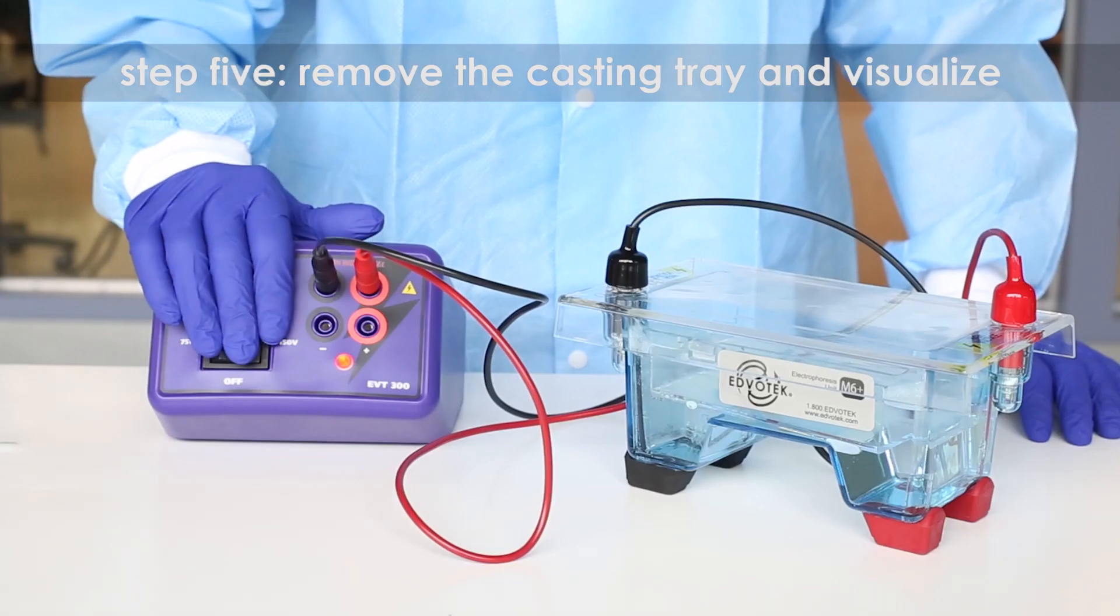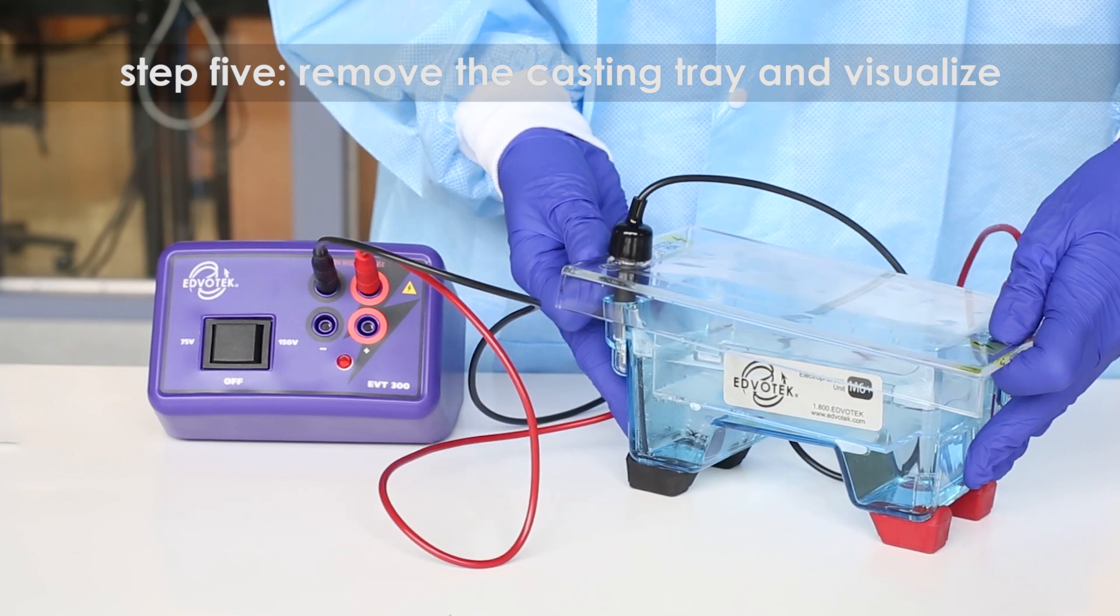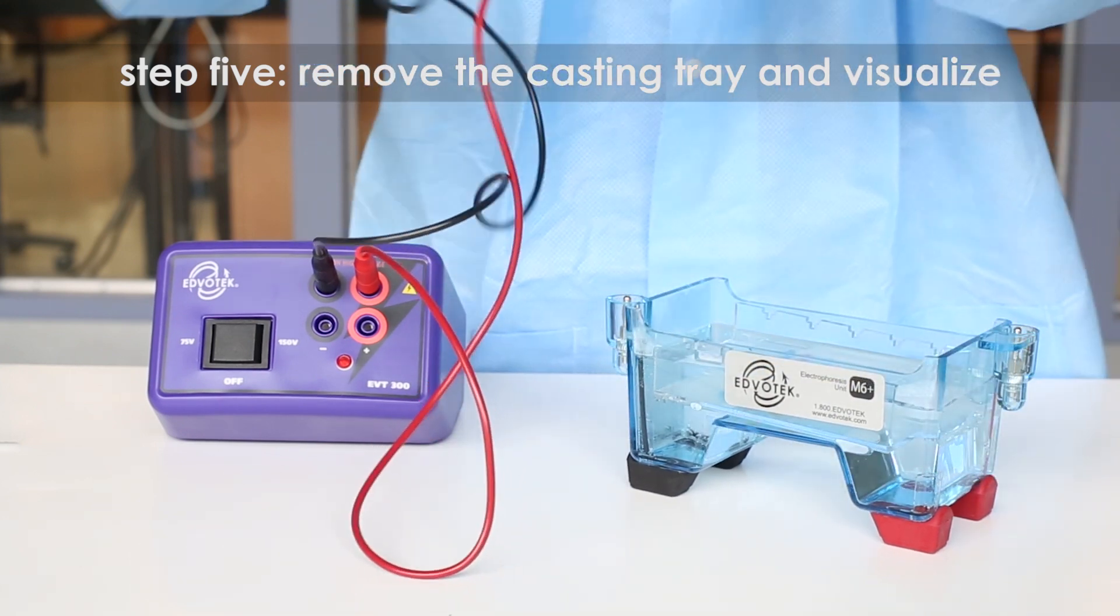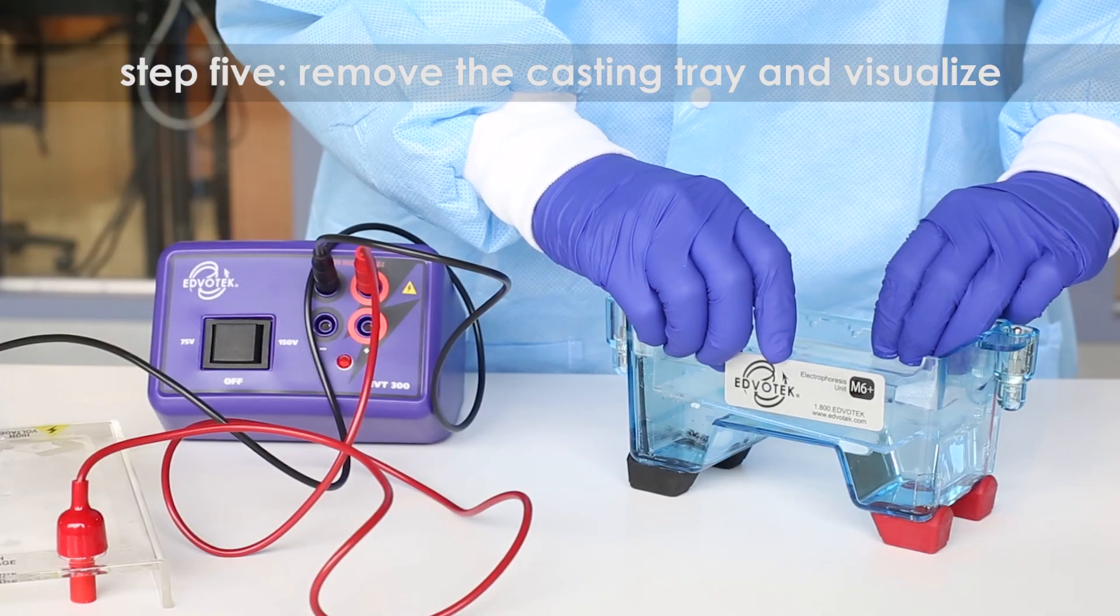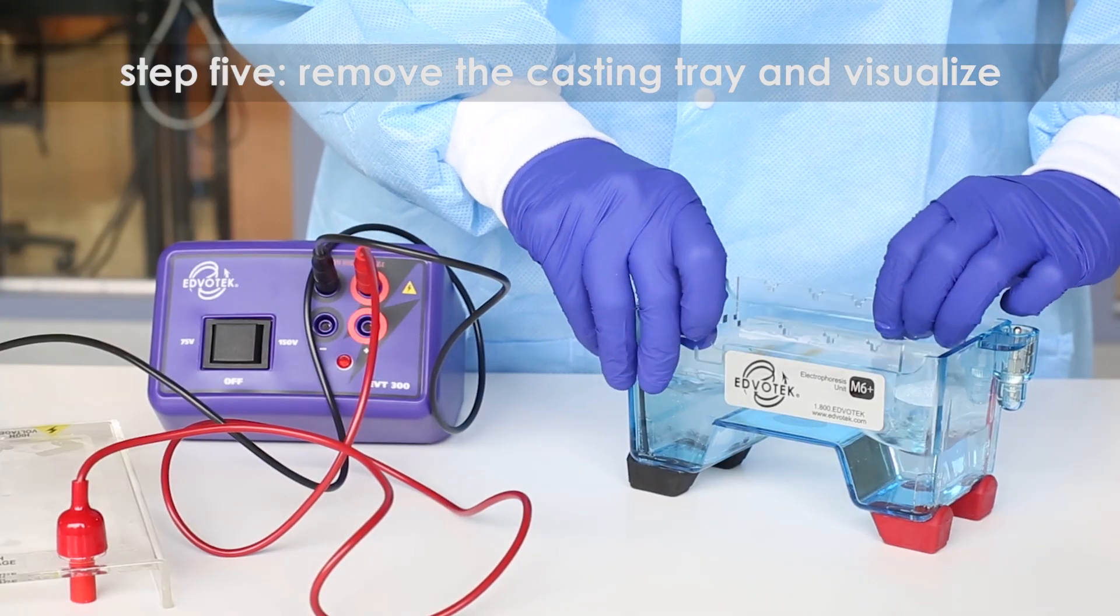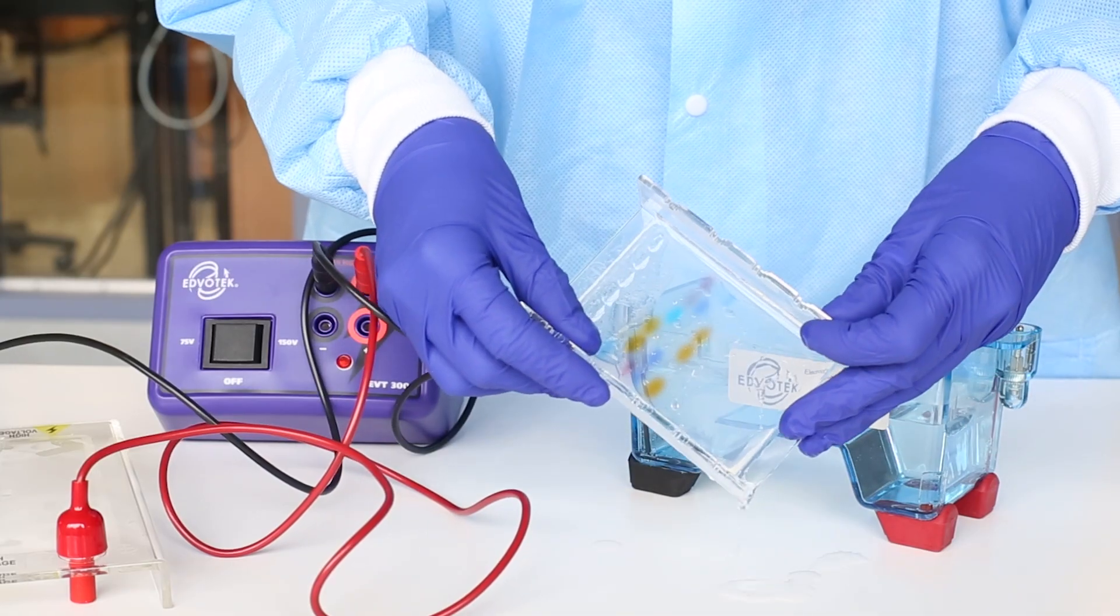Step five: after electrophoresis is complete, remove the gel and casting tray from the electrophoresis chamber and visualize the results. No staining is necessary. And here you see the results.